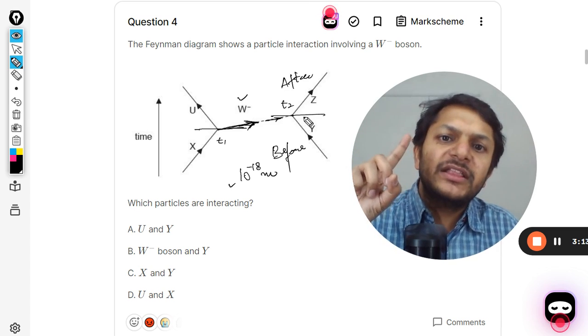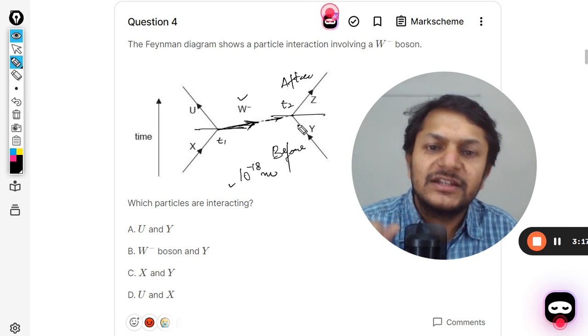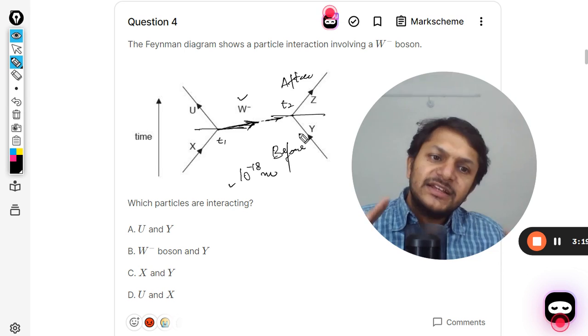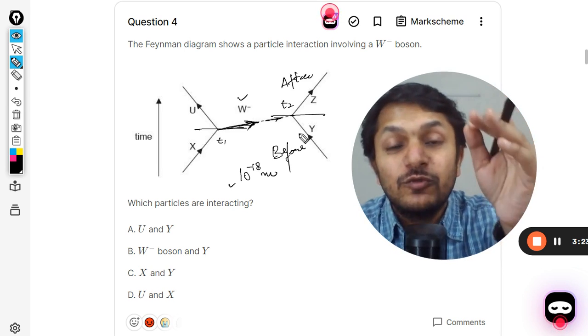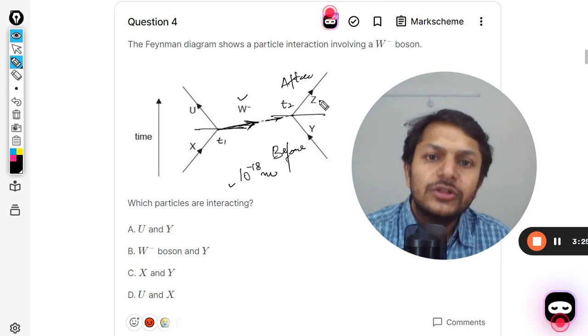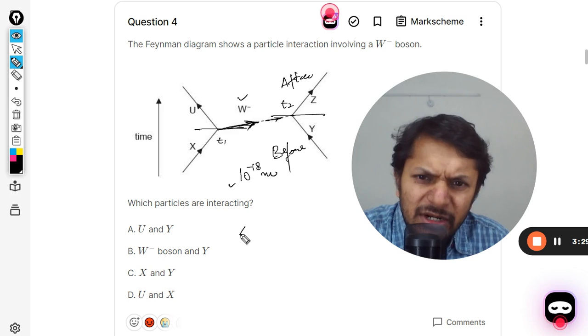After t2, there is only one particle there which is Z. Before t2, there are two particles: one is W minus, another is Y. W minus and Y are coming, interacting with each other, and they convert themselves into one particle that is Z. This particle has been created.